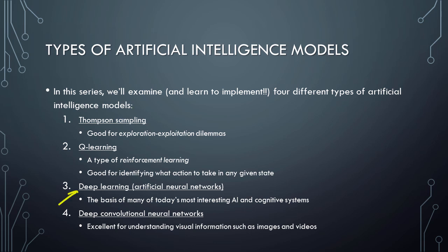Third, we'll learn about deep learning, which involves artificial neural networks. Like the human brain, these neural networks consist of collections of interconnected nodes, or neurons. Deep neural networks are the basis for many of today's most interesting AI and cognitive systems, including those that perform speech recognition, machine translation, medical diagnosis, etc. AI and cognitive systems based on neural networks have even learned to do such things as play video games, paint pictures, and compose music.